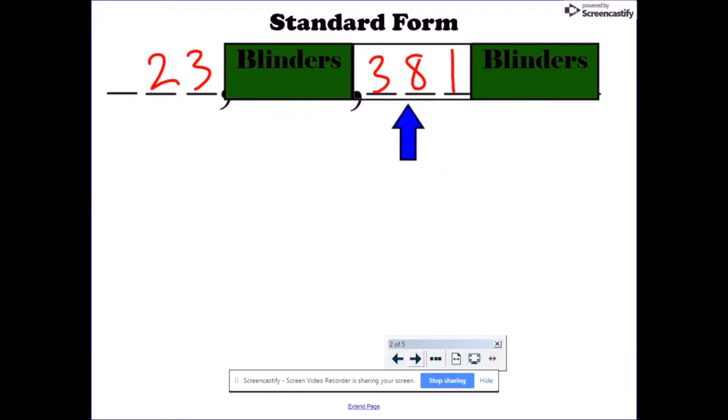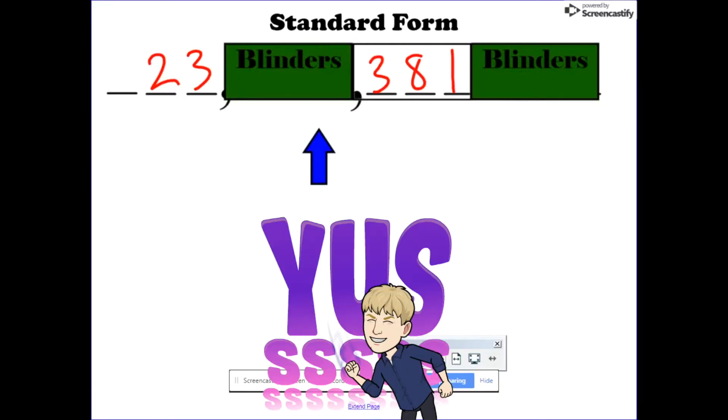381. So that's how you read very large numbers. If you can read a three-digit number, you can read any size number as long as you know the period or the family that belongs to it.